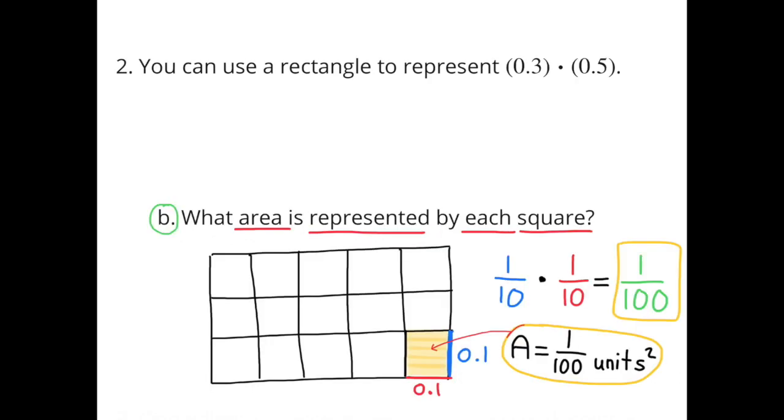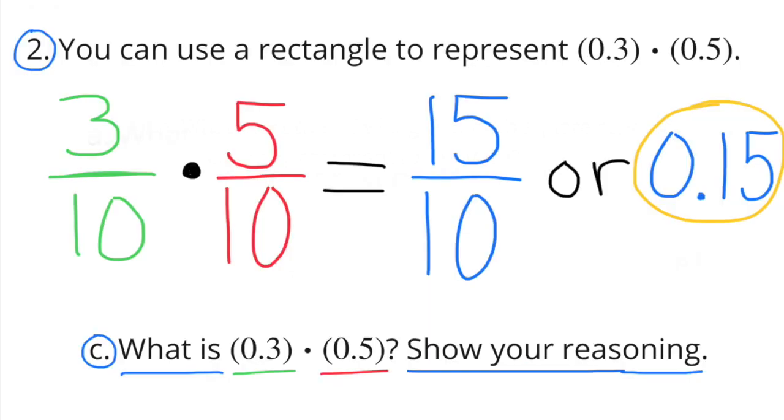Part b: What area is represented by each square? 1 tenth times 1 tenth equals 1 hundredth, so the area of each square would be 1 hundredth of a unit squared. Part c: What is 3 tenths times 5 tenths? Show your reasoning. 3 tenths times 5 tenths equals 15 hundredths.